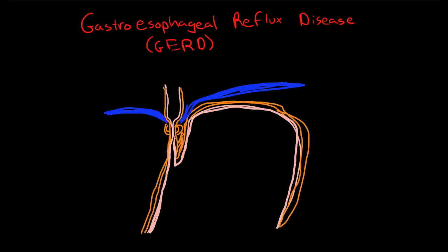In order to understand the disease you need to understand what makes up the gastroesophageal junction and what prevents gastric contents from refluxing up into the esophagus. Obviously the one thing that everyone is aware of is the lower esophageal sphincter or the LES.